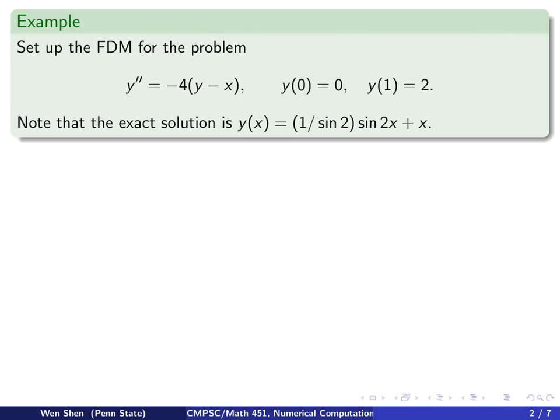Let's now consider this ODE, y double prime equals negative 4(y minus x), with boundary conditions y(0) is 0, y(1) equals 2. It's easy to verify that the exact solution is given by this function: (1/sin 2) sin 2x plus x. You can differentiate this twice, plug it into the left hand side and plug y in here, and you see the equation holds and you can easily verify the two boundary conditions are satisfied.